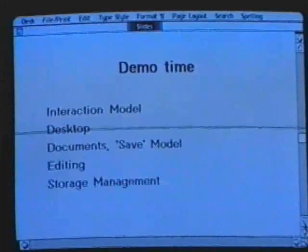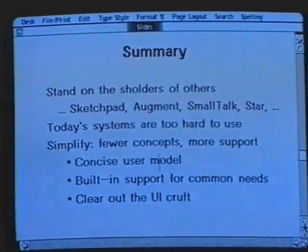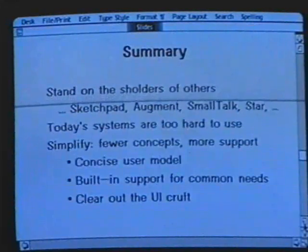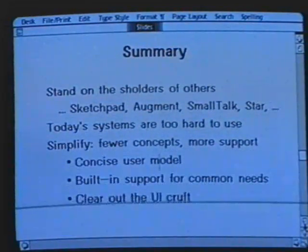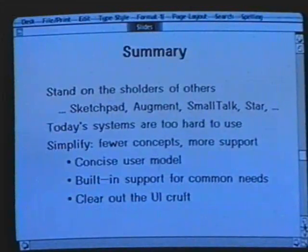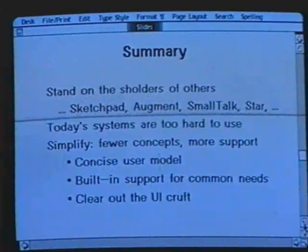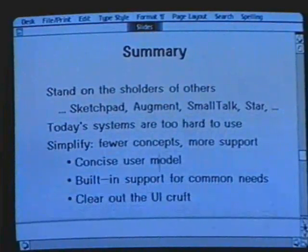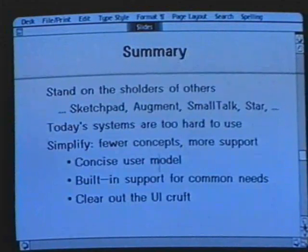To finish up: we all stand on the shoulders of others, and we clearly stood on the shoulders of programs like Sketchpad — and not enough on the shoulders of systems like Augment. Certainly Smalltalk and Star were part of what we stood on, and other systems stood on our shoulders. The Macintosh copied the interaction model and the desktop metaphor, but they did not copy our user model. What they did is they exposed the standard traditional computing model underneath, so users also dealt with processes, applications, and disk files. We tried to hide that. Star also did an extremely good job of hiding that.